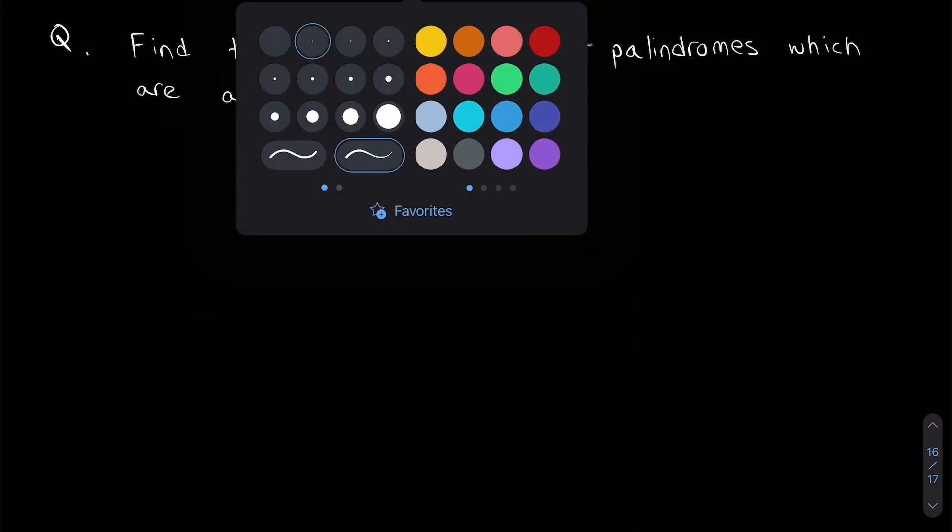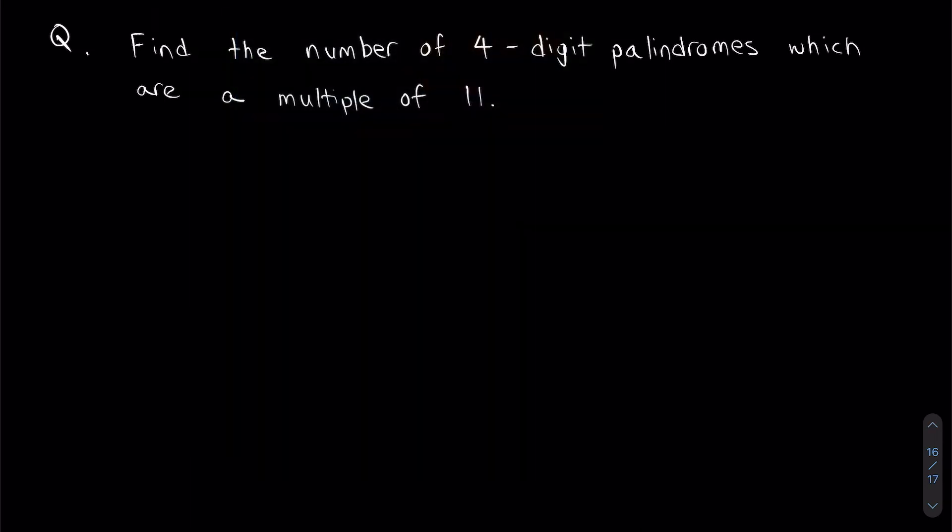So let's take a look at what this question is saying. The question is asking us to find the number of four-digit palindromes, which are a multiple of 11. Some of you might not be exactly familiar with this word right here, palindrome.